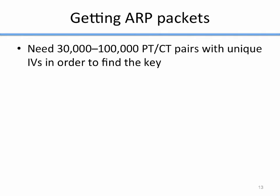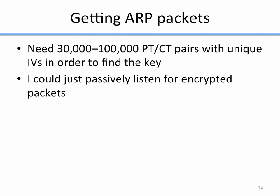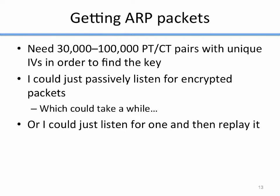I need between 30,000 and 100,000 plaintext/ciphertext pairs with unique IVs in order to find the encryption key. I could passively listen — put my wireless card in monitor mode and wait until I've collected 30,000 to 100,000 packets. That could take a long time, on the order of days or weeks. But the other option is to listen for just one ARP request and then replay it back to the router as-is. I don't need to decrypt it — I can just replay the ciphertext back to the router and have it process it.